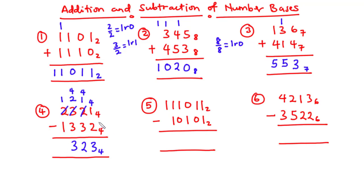Finally, 1 minus 1 is 0. So after subtracting 1332 base 4 from 2321 base 4, our final answer is 323 base 4.